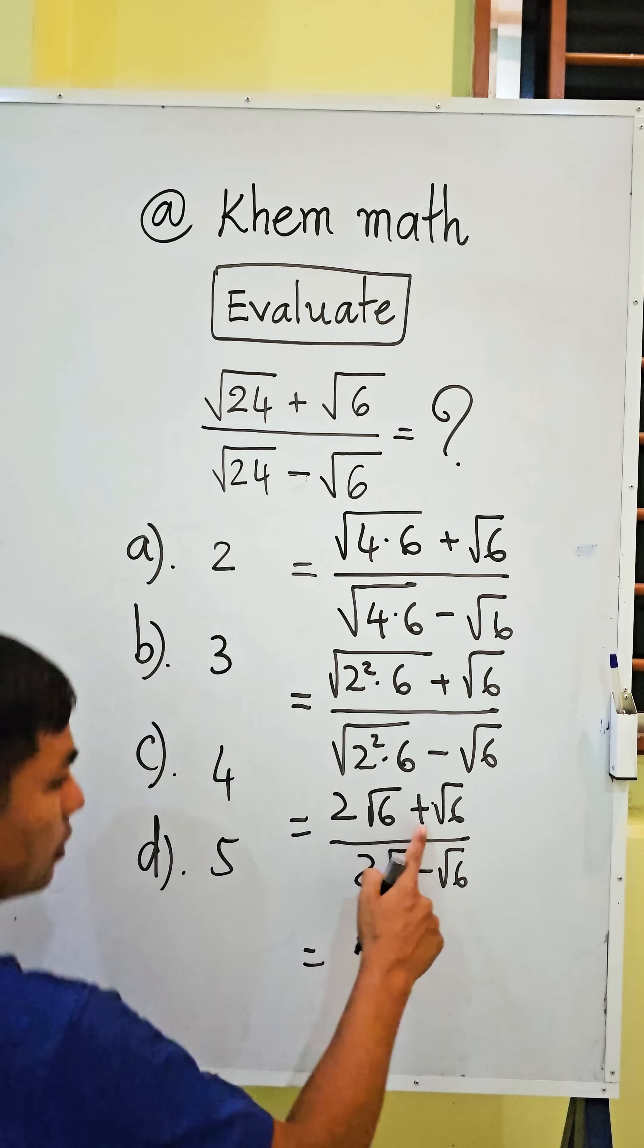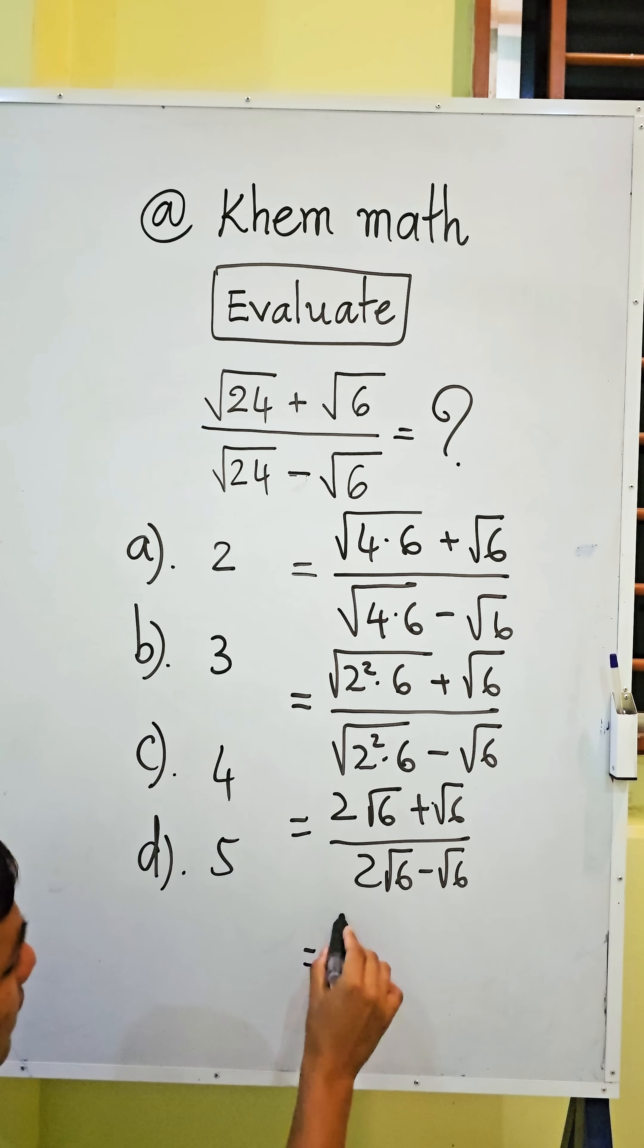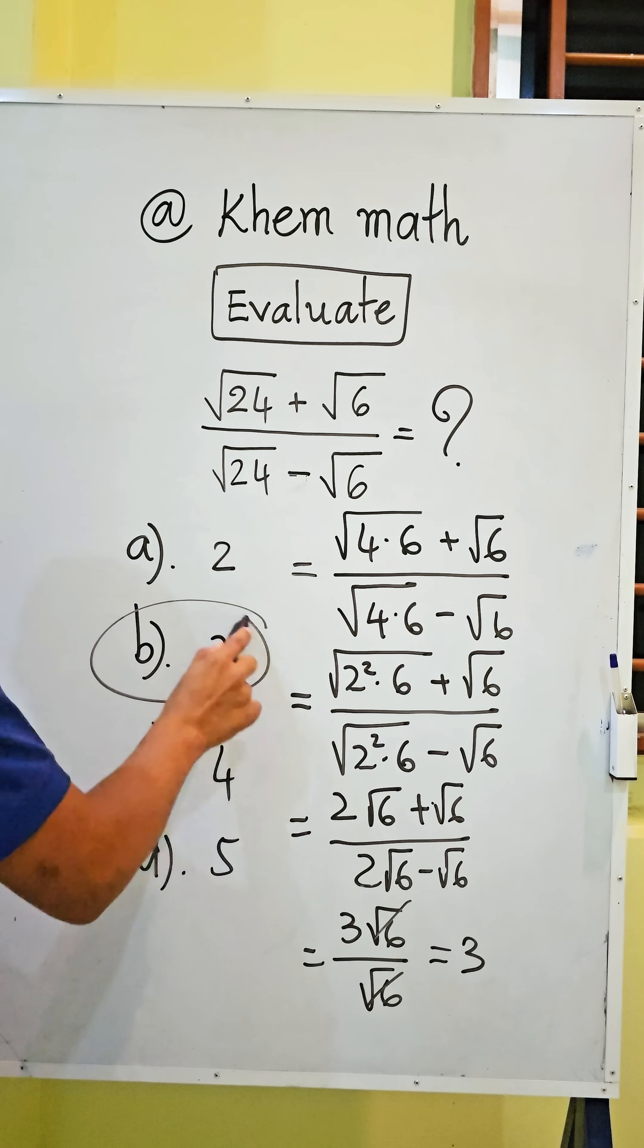This equals 3 square root 6 divided by 1 square root 6, which simplifies to square root 6. And we simplify square root 6, it equals 3. So our answer is B.